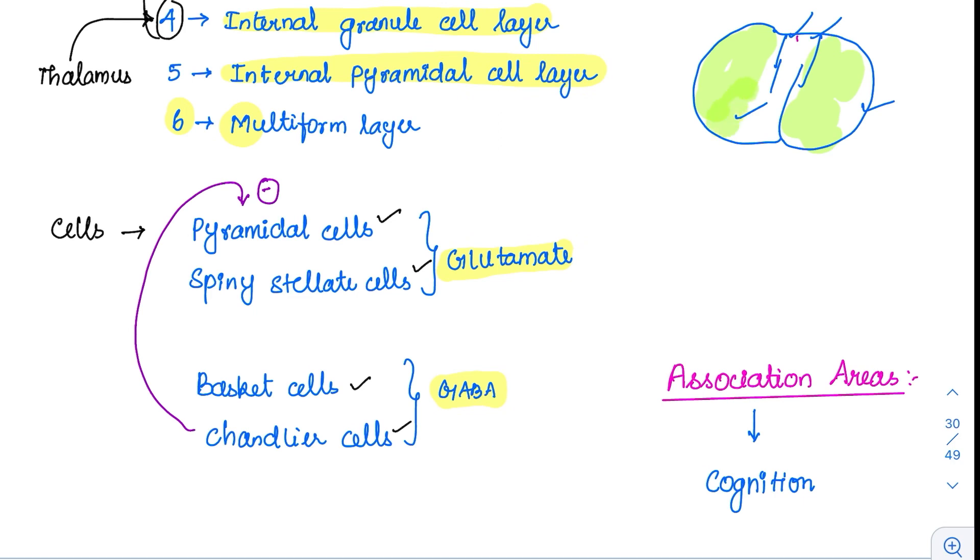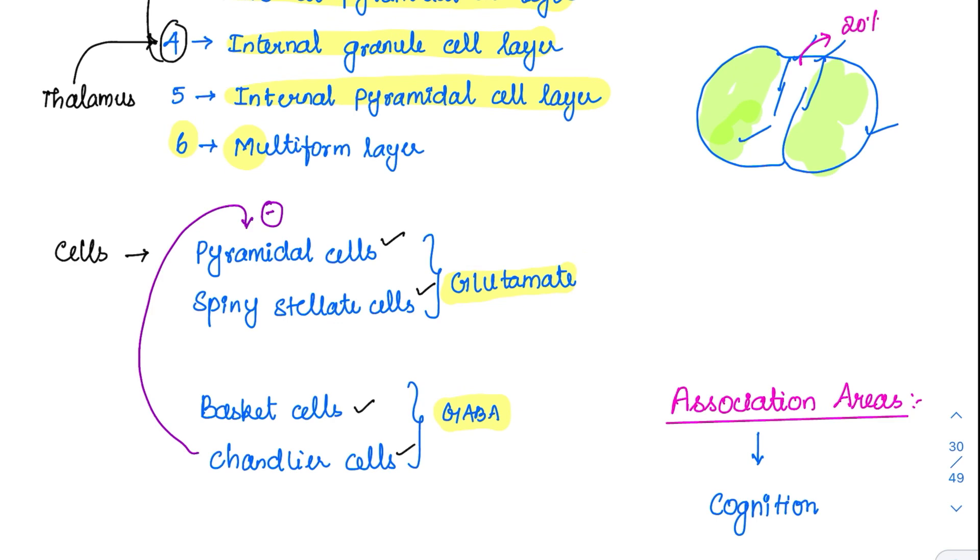The specific nuclei occupy just 20% in the brain. The rest, everything is the association areas. So there are several association areas and all their functions are very important. These association areas are the ones which are involved in cognition function. What is cognition? Understanding the external world is cognition. So whenever there is damage to these association areas, we obviously will land up in some kind of disorder.